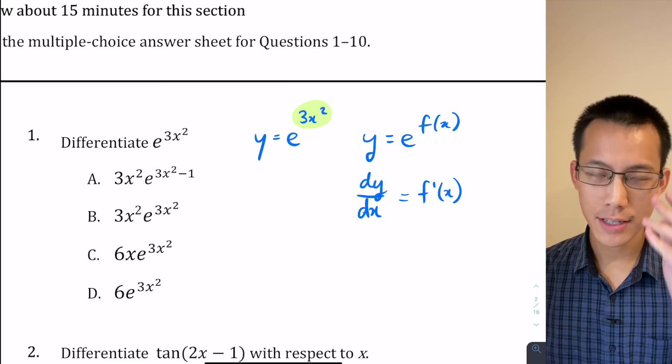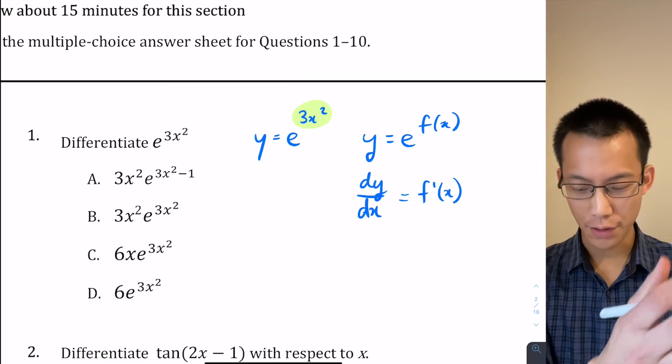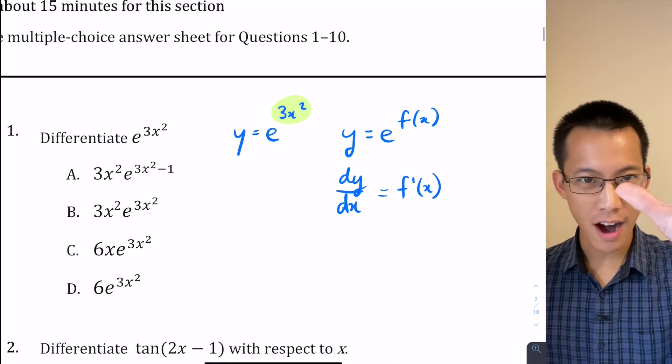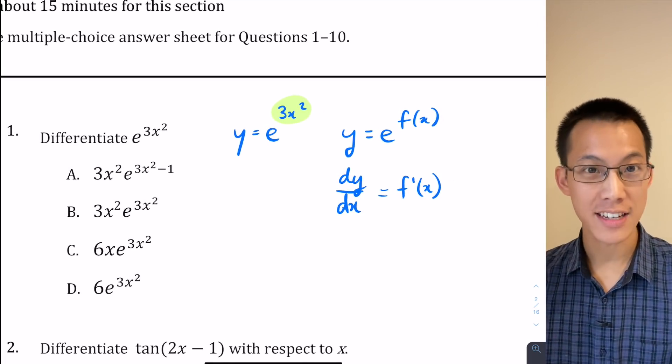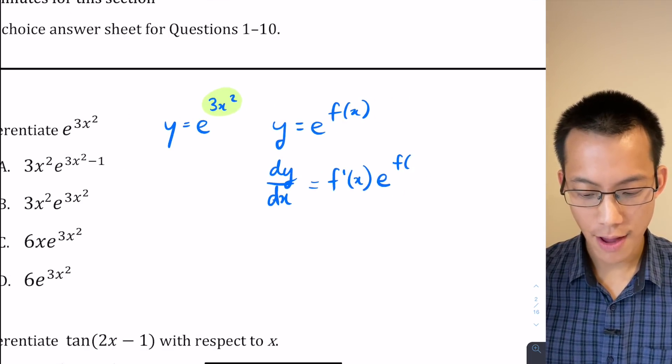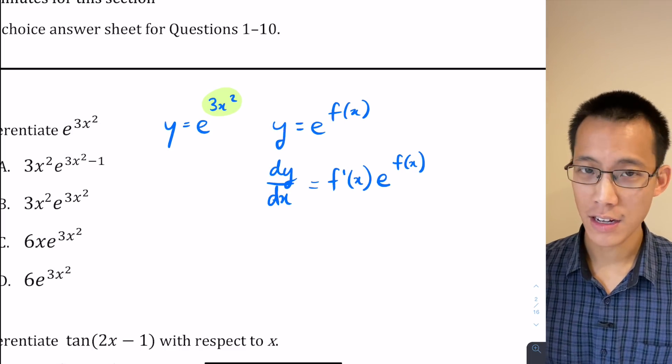Then you differentiate the outside, which is e to the power of some stuff. E is special because when we differentiate e to the power of something, we generally get e to the power of something, whatever you started with. So it's just going to become e to the power of f(x). That's the outside derivative.